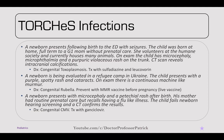For TORCH infections, a newborn is brought to the ED with seizures after a home birth. The mother volunteers at the Humane Society and houses many animals. On exam, the child has microcephaly, microphthalmos, and a purpuric violaceous 'blueberry muffin' rash on the abdomen. CT shows intracranial calcifications — diagnostic for congenital toxoplasmosis. This is a risk for pregnant women who work with cat litter or feces. Treatment is sulfadiazine or leucovorin.